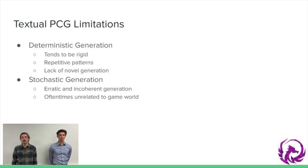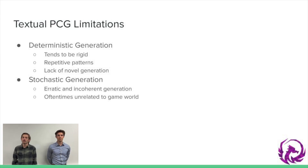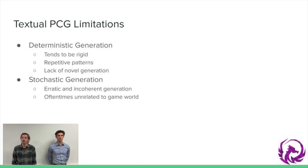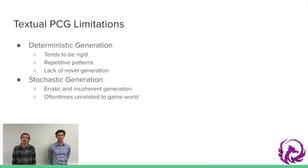There are two types of limitations that affect textual PCG that we attempt to balance. Deterministic generation constrained by predefined rules tends to be too rigid and can lead to repetitive patterns and a lack of novelty in generation. However, the benefits of deterministic processes is that they can be contextually grounded and remain predictable and accurate. On the other hand, stochastic content generation based on neural networks or other machine-learned processes suffer from the inverse problem of occasional erratic and incoherent content generation, causing the generated text to oftentimes be unrelated to the game world.